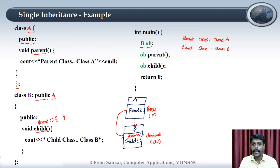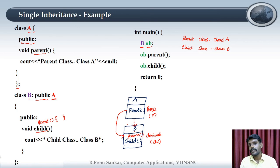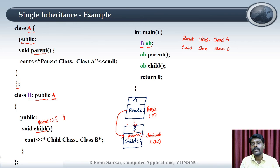Class A is the base class or parent class. Class B is the child class or derived class. The syntax is: derived class name, followed by the access modifier, followed by the base class name. This is single inheritance. We will discuss more in the next lecture. Thank you for your patient listening.